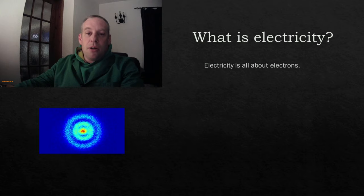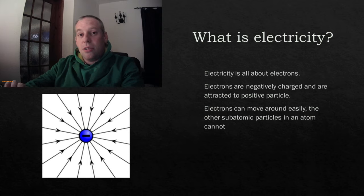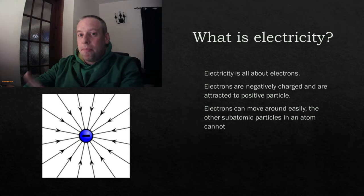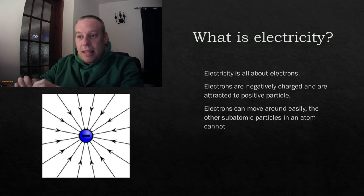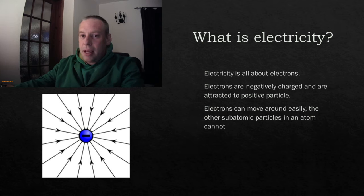The electron is the particle we're going to focus on. Electrons are so small and they can move around so quickly, and the other crucial thing is that they are negatively charged. Charged particles work a little bit like magnets: if you put two the same together they repel and push away from each other, and if you put opposites together they attract. Electrons can move around all over the place, whereas the protons in the middle can't, so the electrons are the useful ones.